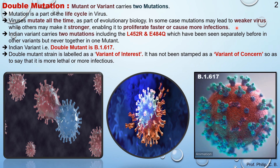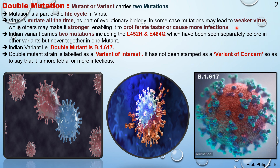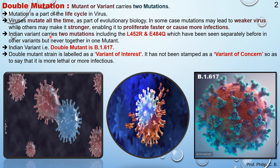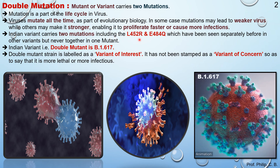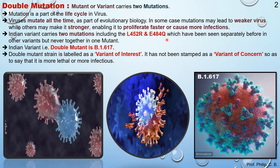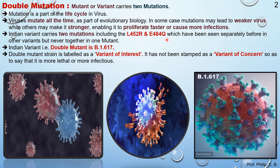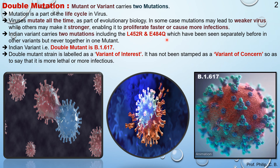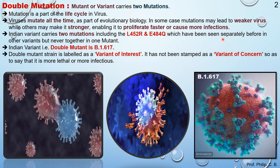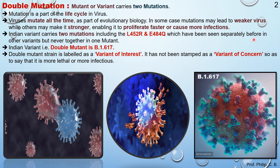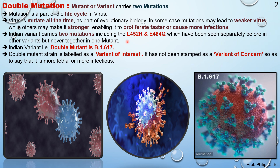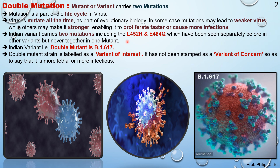Talking about the Indian variant, it carries two mutations: L452R and E484Q — that is the name given to the two mutations, which is why two different colorations were used for the virus in the previous image to make it easier to understand. These two mutations have been seen separately before in other variants but never together in one mutant.